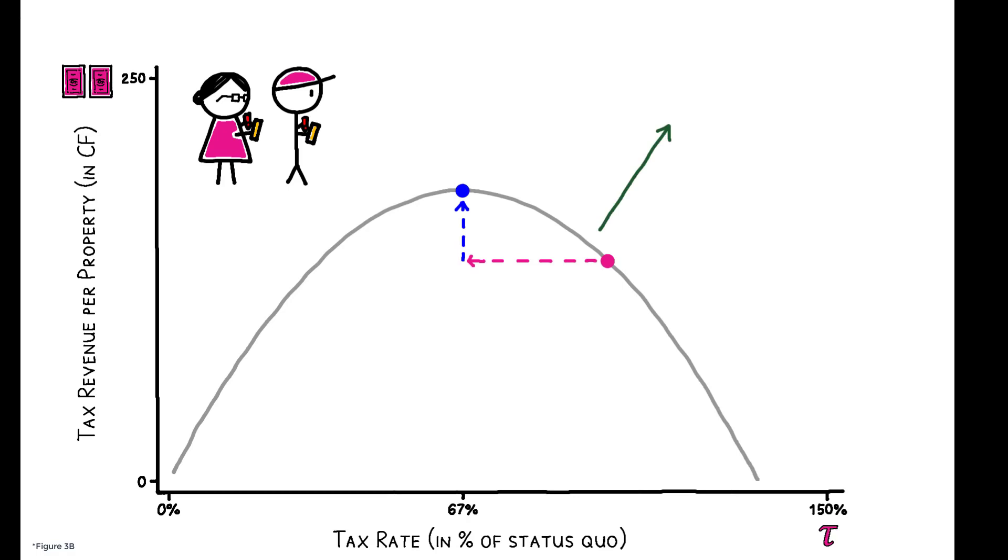This shifts the estimated revenue curve up and to the right, and at the same tax rate, revenue would now be 61% higher. But the key is that higher enforcement has actually shifted the RMTR.